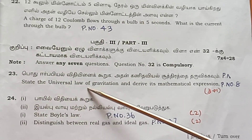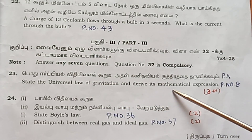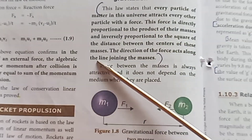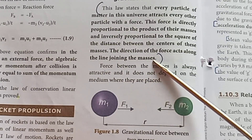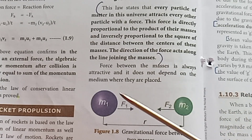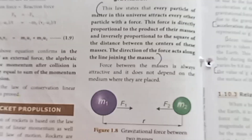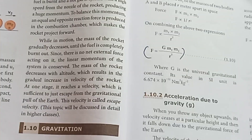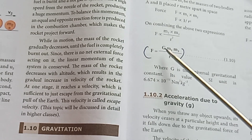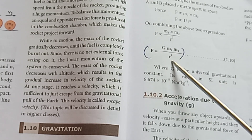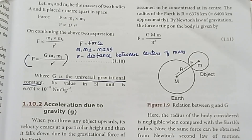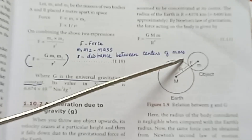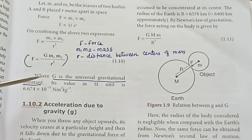Question 23: State the universal law of gravitation and derive its mathematical expression. Page number 8. The force acts along the line joining the masses. F = G M1 M2 divided by R squared, where F is force, M1 and M2 are masses, R is distance between centers of mass.